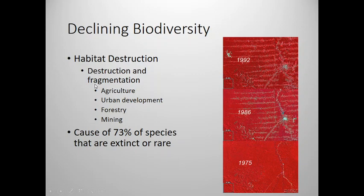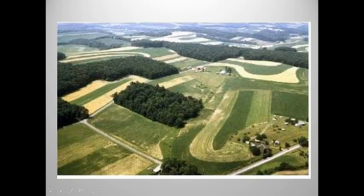Habitat fragmentation is another issue. Humans don't use all the land in a straight line around a city — in this picture there are patches of potentially native forest here and there. Even though there's a decent amount of native forest in the picture, because they're all isolated, these habitat patches are not really acting like the native habitat. We'll come back to this idea in the land use chapter.